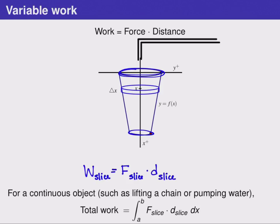And so we have this result. For a continuous object, such as pumping water, the total work required to pump it all out is the integral from a to b of the force on one slice times the distance on one slice dx. And again, a and b are the minimum and maximum distances that we would have to pump this water. Once again, we've added up many thin slices using an integral.